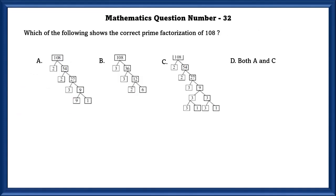Mathematics question number 32. Which of the following shows the correct prime factorization of 108? The prime factorization means that in the end there should be only prime numbers. No other number should be there. As we can see here in the A option, 9 can still be divided, so this is wrong. In the B option, we can see that 6 can still be divided, so this is also wrong. But in the C option, we can see that all are prime numbers. 3, 1, and 3, 1 are all prime numbers. So the answer is C.